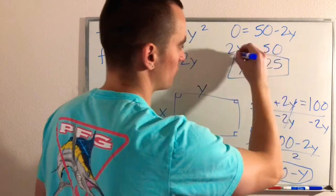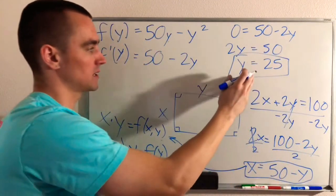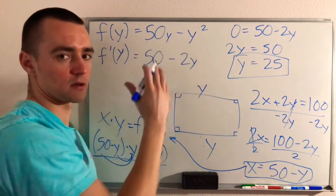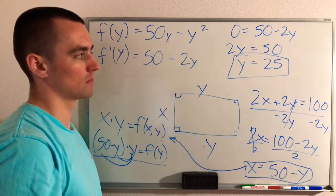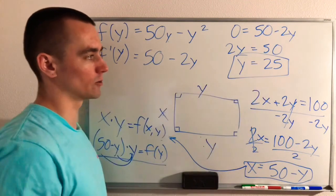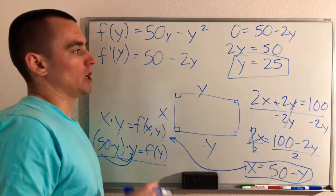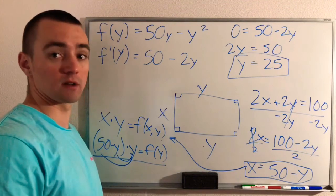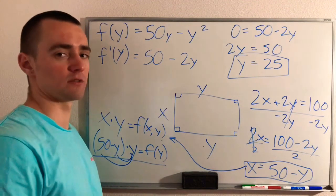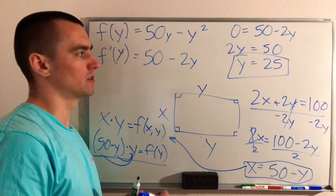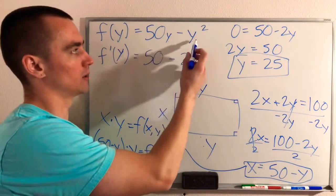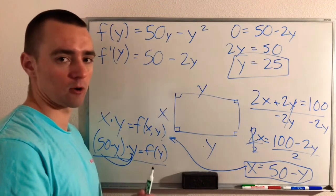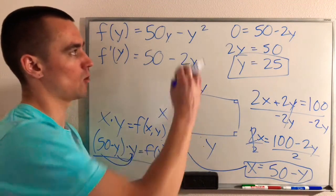So if Y equals 25, that is our critical number. That tells us that this function, F of Y, either has a maximum or a minimum at Y equals 25. We could test to figure out using a couple different methods that I have done videos about, and I'll link to those if you want to check those out. But there's kind of a shortcut here. We know that this is a parabola, because it's a polynomial, and its highest power variable is Y squared.